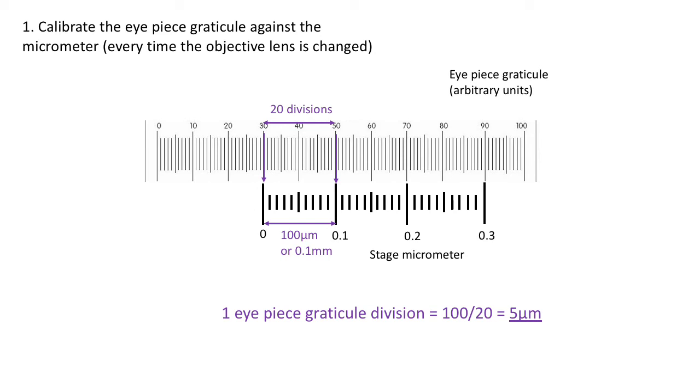Now you know that one division on your eyepiece graticule is equal to 5 micrometers. You can move around and look at all sorts of areas on the slide, and you will always have the eyepiece graticule in your vision. You can now use that to measure anything you observe by lining up any cells against the eyepiece graticule.